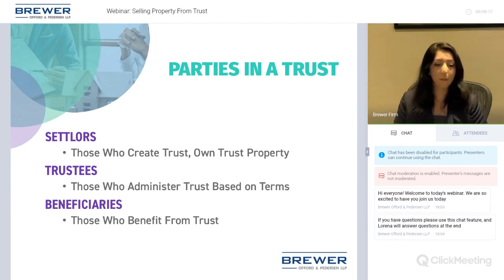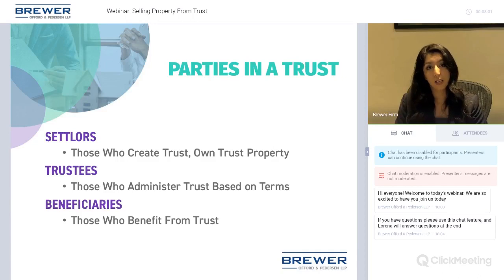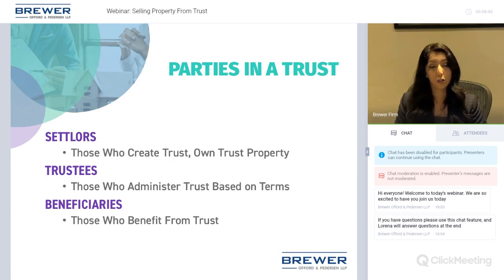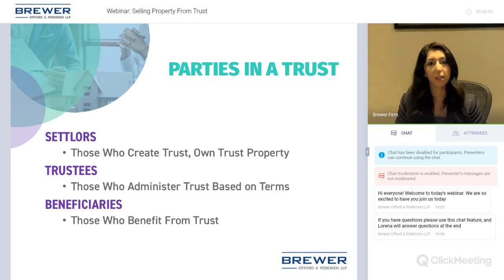The three main parties in a trust are settlors, trustees, and beneficiaries. The settlors are the people who create the trust and own the trust property — in our example, Harry and Wendy. The term 'trustor' is also used and is interchangeable with 'settlor,' and you'll see that term fairly often.